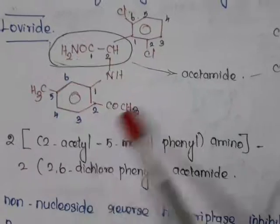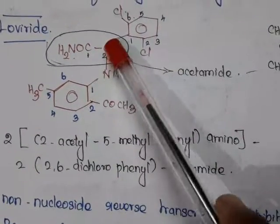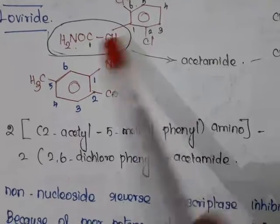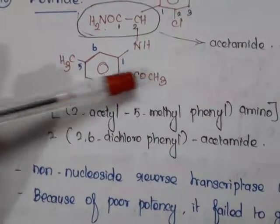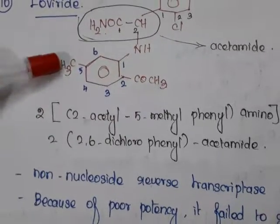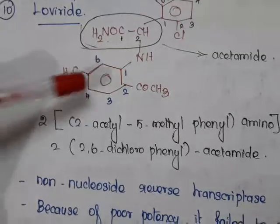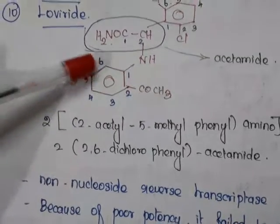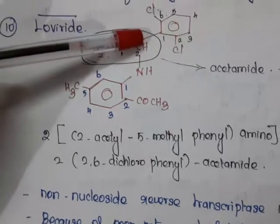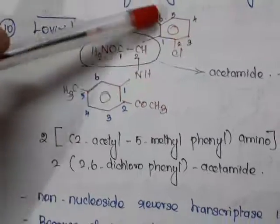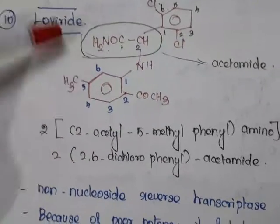Everything is attached with the second portion of acetamide. In the second carbon we have 2-acetyl-5-methylphenylamino, and again in the second carbon what is attached is 2,6-dichlorophenyl. So the full name ends with acetamide. Loviride comes under non-nucleoside reverse transcriptase inhibitors.